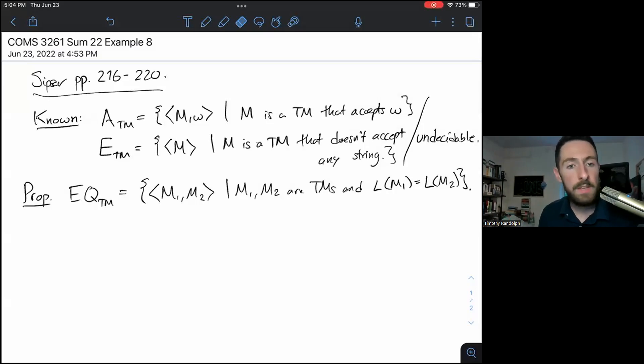What we know is that this first language ATM, consisting of pairs of a Turing machine and a string such that M accepts W, that's undecidable. We've also shown that this language ETM of all encoded TMs that don't accept any strings, also undecidable. We'll use those two facts as the basis for the contradictions we're about to prove.